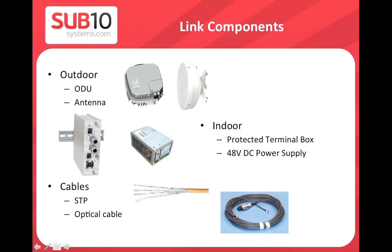Ordering an E1000 link includes two ODUs and two protected boxes. You must order two antennas separately — 35 cm or 65 cm. Power supply can also be ordered from us if needed. Cable options include STP Cat7 or optical fiber to connect the protected box to the ODU.